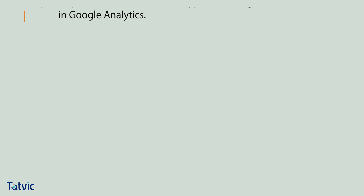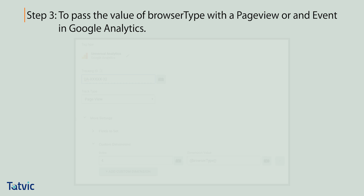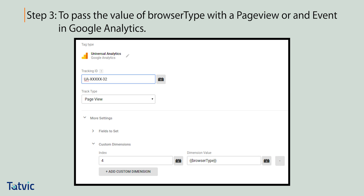The third and final step is to pass the value of browser type with the page view or an event in Google Analytics. This is all — we are now set to track the Facebook in-app browser in Google Analytics.